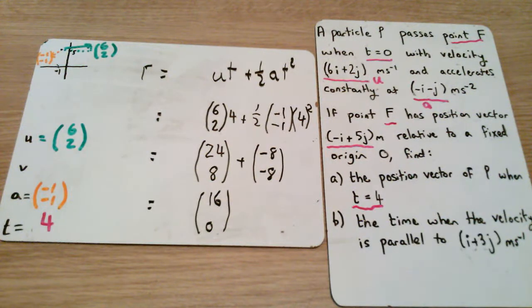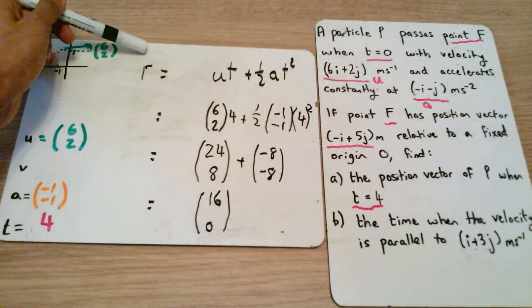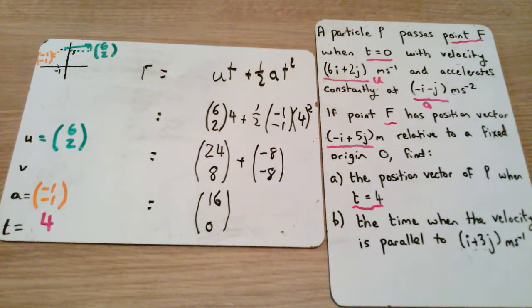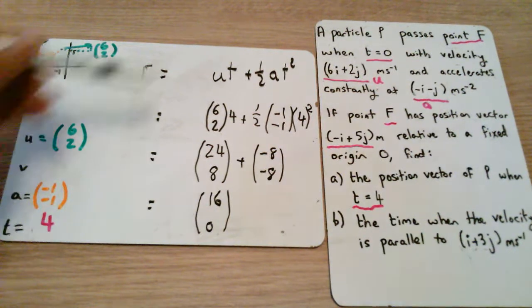So that means that after 4 seconds this has traveled 16 to the right and 0 down. But the position vector where it finishes isn't 16, 0. This is a very, very common mistake. What this is is 16, 0 from its initial position. So if it started here at minus 1, 5, it's now gone 16 to the right.